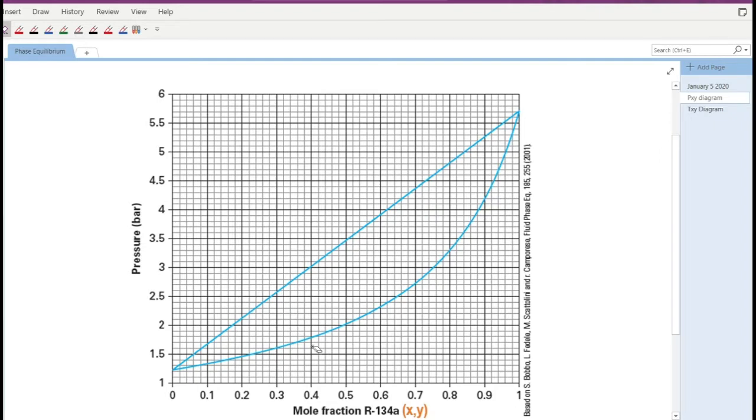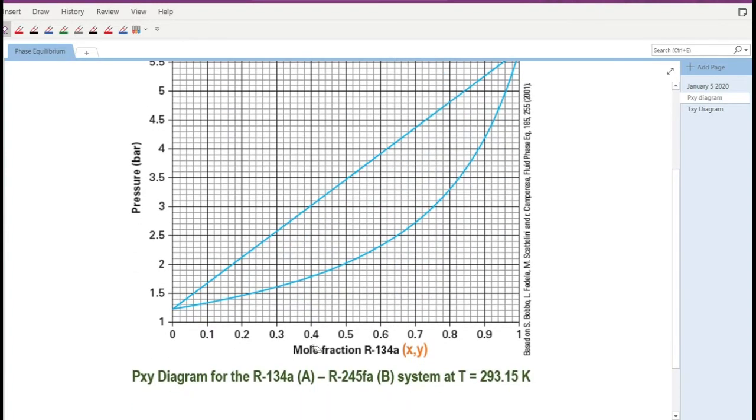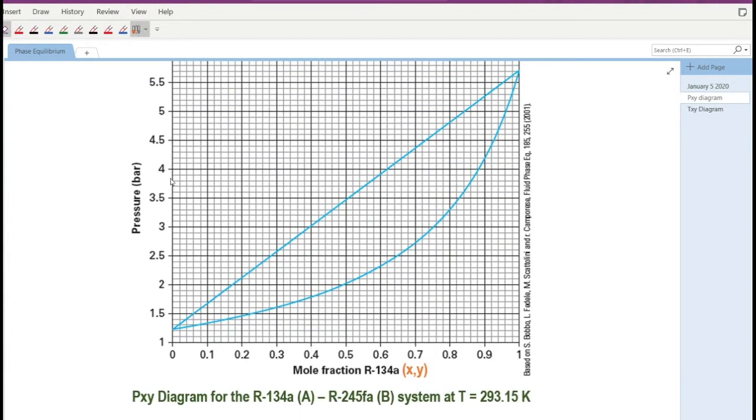So I have here a PXY diagram of a binary mixture containing two refrigerants. Component A is R134A while Component B is R245FA.